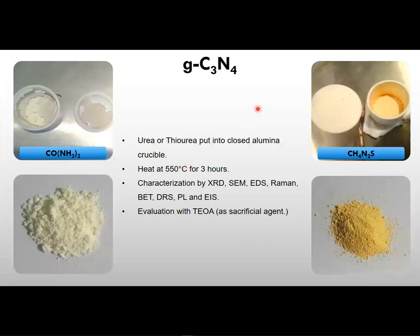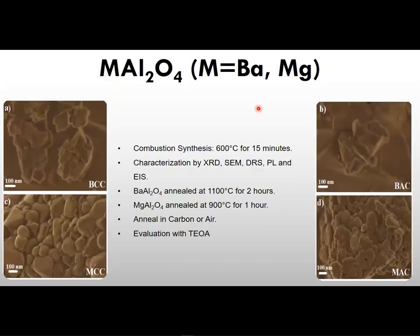we first synthesized graphitic carbon nitride by pyrolysis using urea or thiourea at 550 degrees Celsius for three hours. We carried out various characterization techniques to learn about the properties of our material and also carried out the hydrogen evolution reaction using this material as a photocatalyst with triethanolamine as the sacrificial agent.